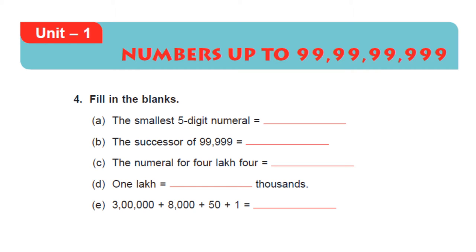Hi friends! Today we are going to see Unit 1 in Class 5, that is numbers up to 99 crore 99,99,999. I think you all remember what we read in Class 4 — we read numbers till 9,99,999. We will see what comes after it if we add 1. Before that, we will solve some sums. Let us solve the sums.